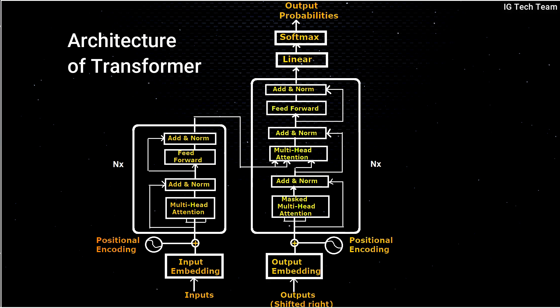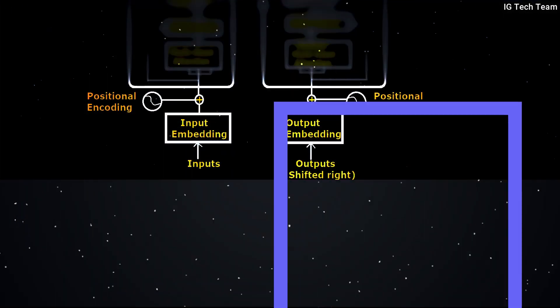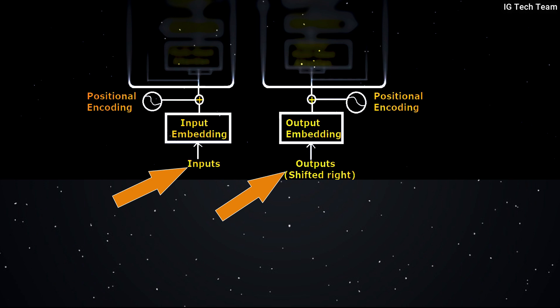Look at this architecture — don't get worried by looking at it. First, let me discuss input and output embedding. If we are doing language translation from English to another language like Hindi, our input will be the English language and the targeted output will be the Hindi language. We have to provide both input and targeted output because we want our model to learn. So we pass the English sentence to the encoder block as input and the translated Hindi sentence to the decoder block as targeted output.